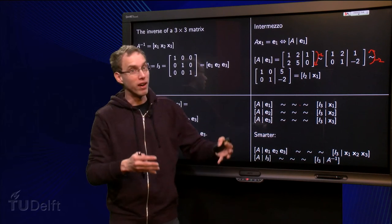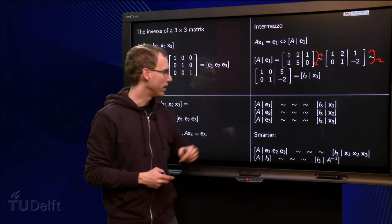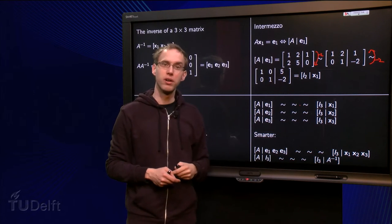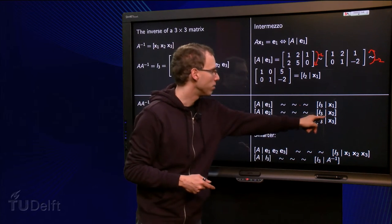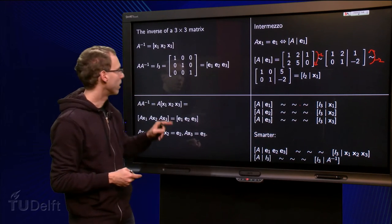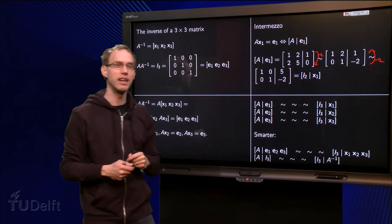And then the third one, again A but now augmented with e3 instead of e2. Same again row reductions, identity matrix, and then you got your x3. And then you have your x1, x2, and x3, which you can plug in to get your identity matrix.